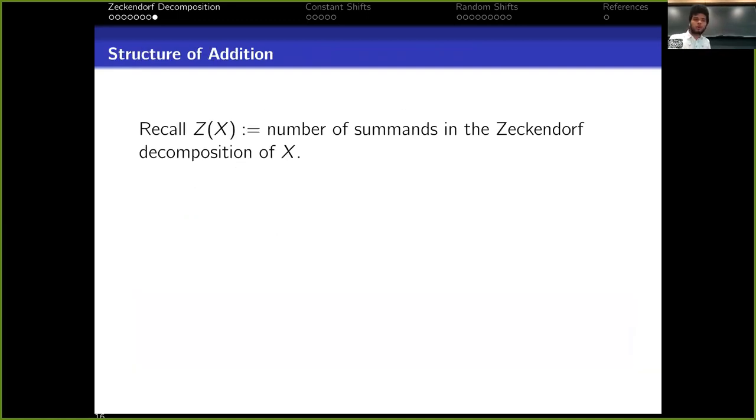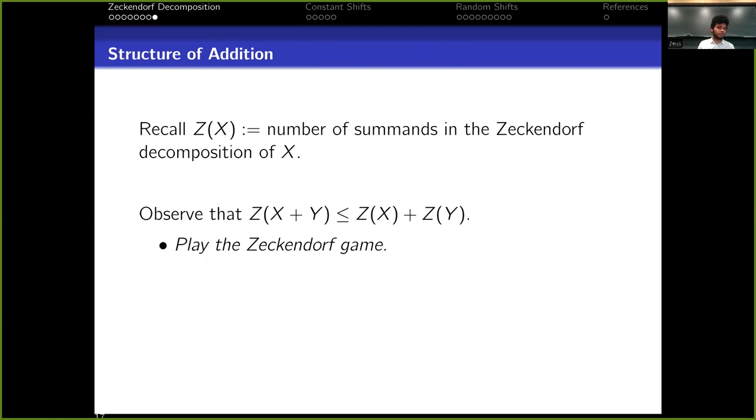All right, well now let's talk a little bit more about the addition, how addition plays a role in that. So we call z of x the number of summands in the Zeckendorf composition for x. A first property that we have is that z of x plus y is at most z of x plus z of y. Why that? If we have the Zeckendorf composition of x and the Zeckendorf composition of y, we add them coordinate by coordinate, kind of naively. We get z(x) plus z(y) summands. When we play the game, the Zeckendorf game, at the end of the game, we're going to have the Zeckendorf composition of x plus y, and we're going to have z(x + y) summands. But every move of the Zeckendorf game does not increase the number of summands. It either stays the same or decreases. So that's why this relation holds.